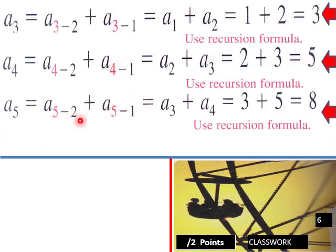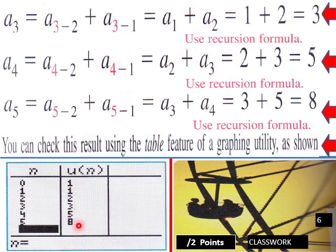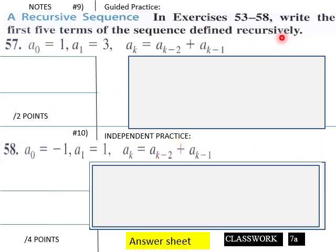And a₅ = a₃ + a₄ = 3 + 5 = 8. You can check this result using the table feature of a graphing utility. Here is your sequence and your output on the graphing calculator.